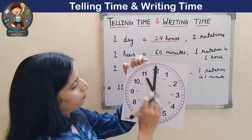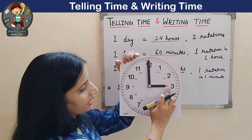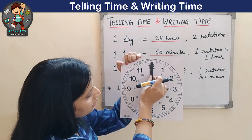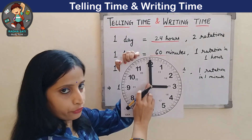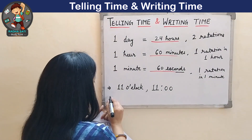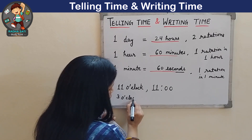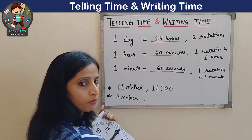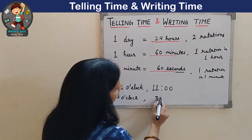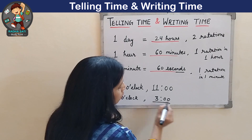Let's take one more example. Here the hour hand is pointing to 3, and our minute hand is exactly at 12. This means the time is 3 O'clock. We can write it as: 3, then O, put a comma, and clock — 3 O'clock. And in digital form, we write 3, then 2 dots, then 00 — 3:00.